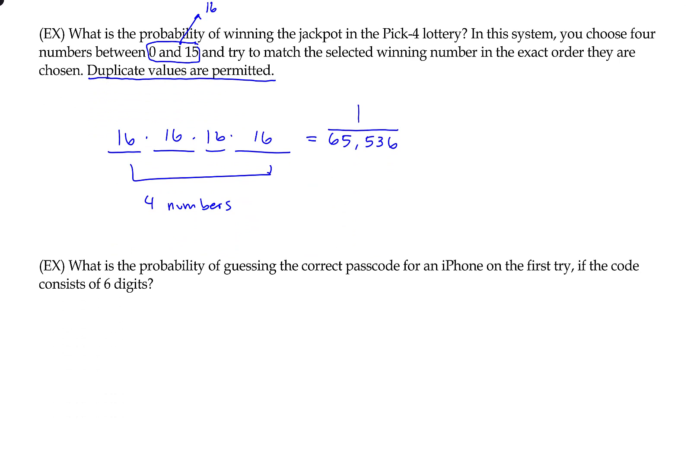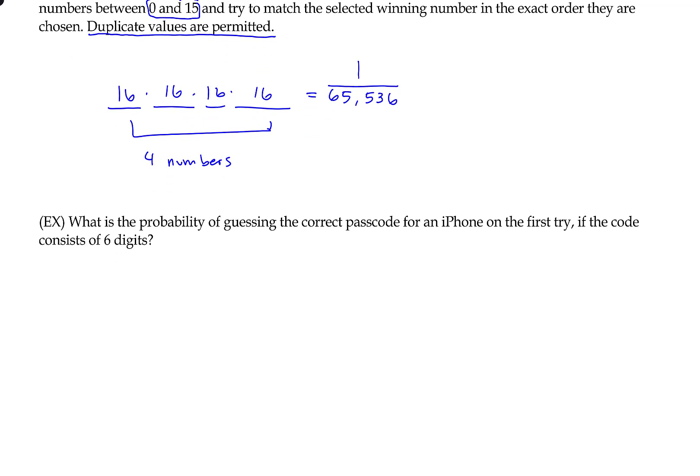What is the probability of guessing the correct passcode for an iPhone on the first try, if the code consists of six digits? So you have these six digits to create your passcode. And each digit could be the values 0 through 10. So 0 through, sorry, 0 through 9 gives you 10 possibilities. So you have 10 possibilities for the first digit, the second, the third, and so forth, because repetition is allowed. Like you could technically pick the value 7 7 7 7 7 7, that's fine, it would allow it. So there's 10 possibilities on each one. That's 10 to the sixth, which is 1 million. So there's 1 million passcodes possible, only one of which is correct. So that probability will be 1 out of 1 million.